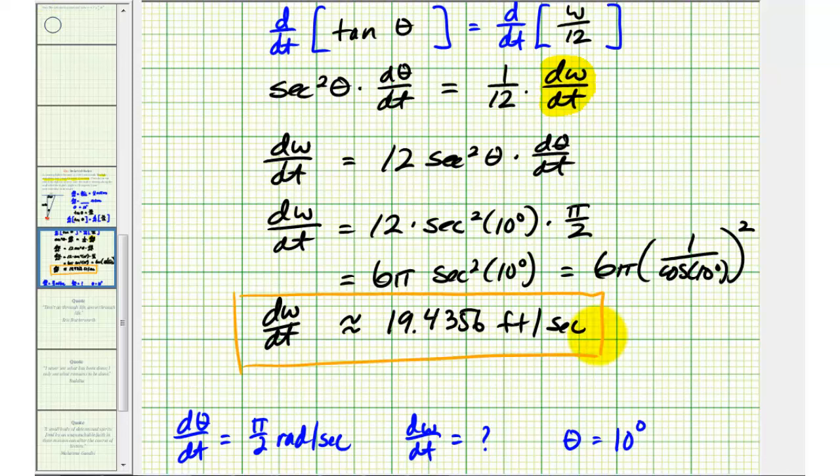So again, under these conditions, when d theta dt is equal to pi over 2 radians per second and the angle theta is exactly 10 degrees, then the light is moving along the wall at approximately 19.4356 feet per second. Now, of course, if we were to change theta or d theta dt, it would change the rate at which the light is moving along the wall.